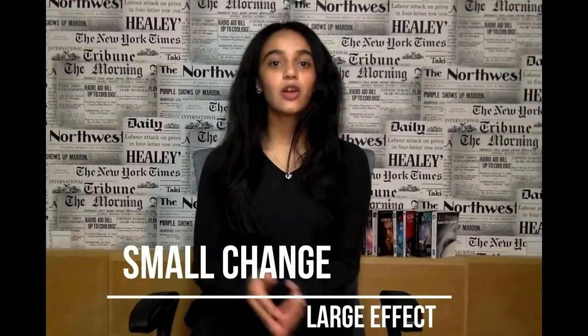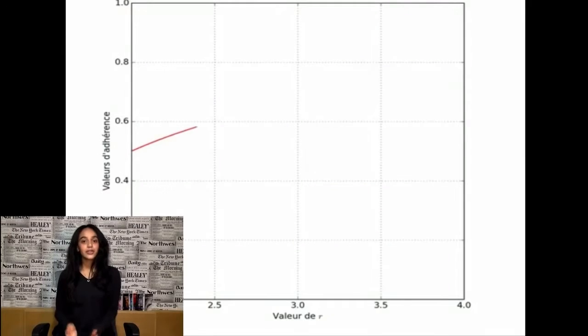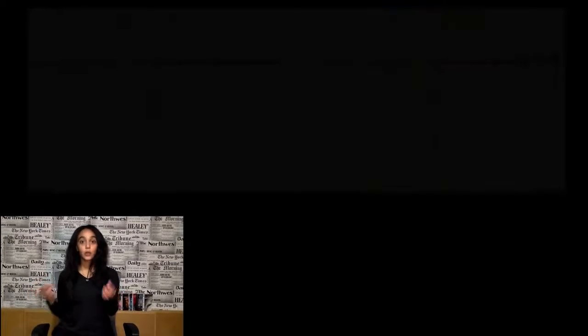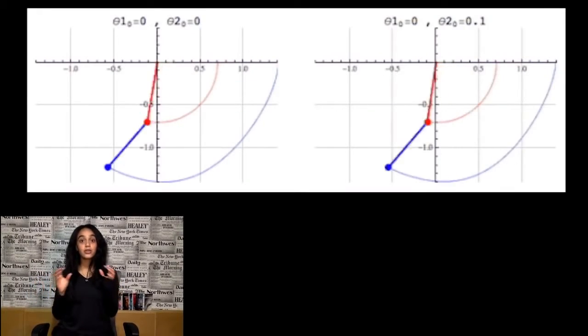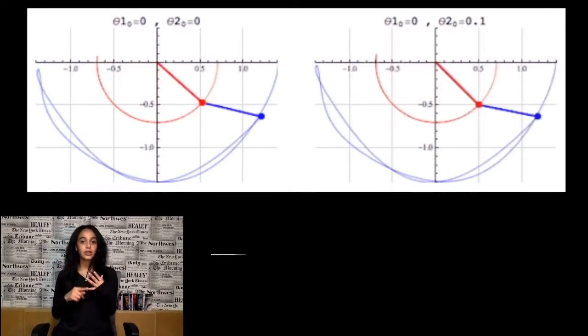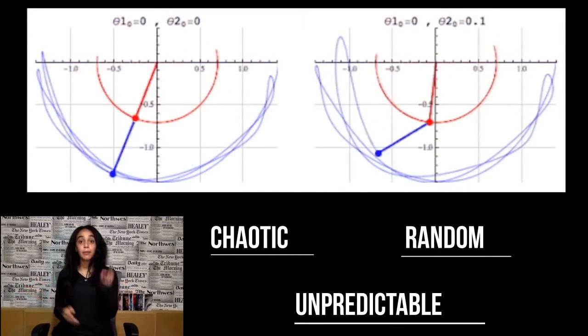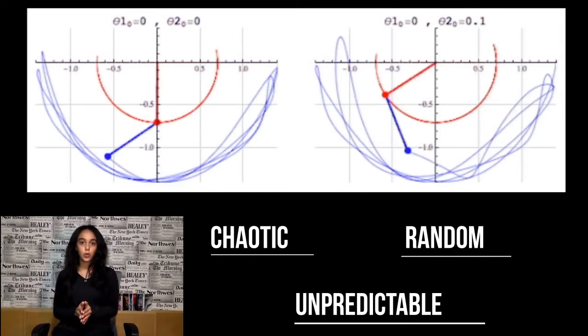Chaos theory is the concept that small changes now may result in very large effects later. Mathematically, it studies the behavior of complex and non-linear systems. A non-linear system is a system in which the output is not directly proportional to the input, which means that those systems may appear chaotic, unpredictable, and completely random — but in fact, they are not random at all.